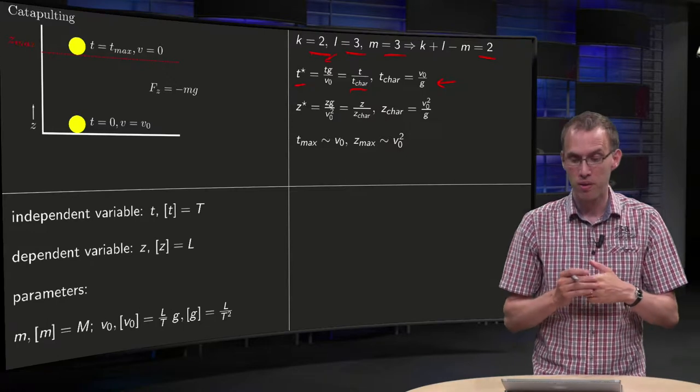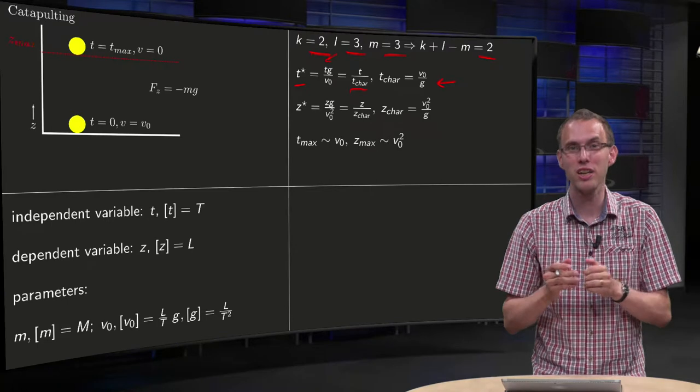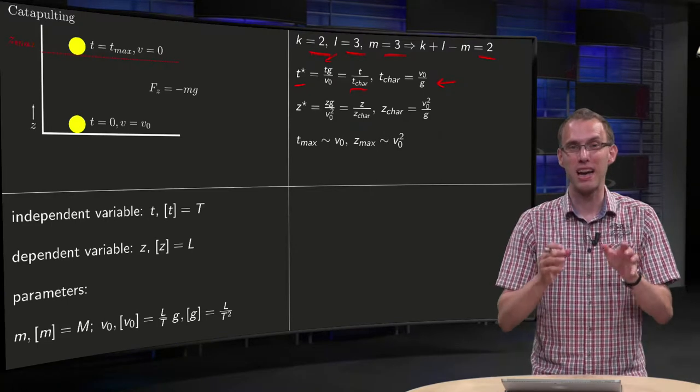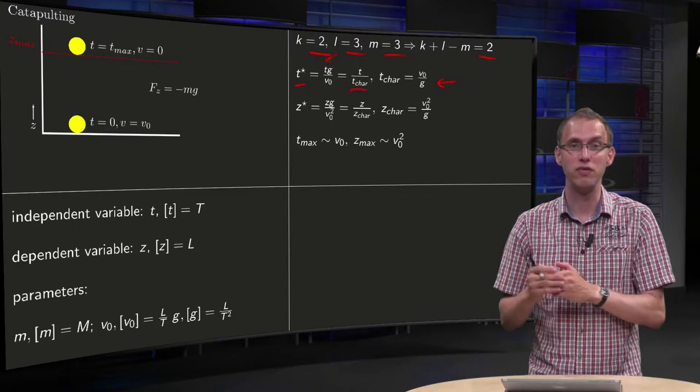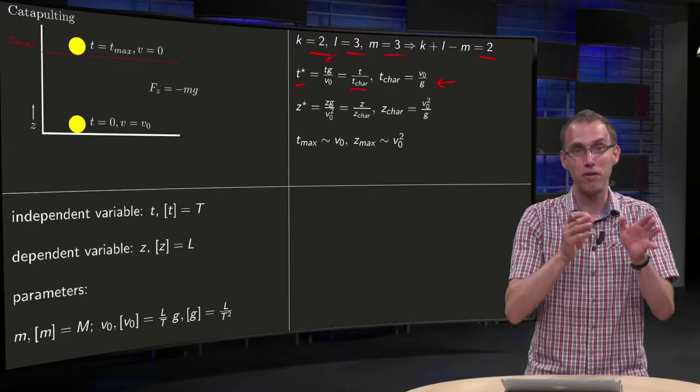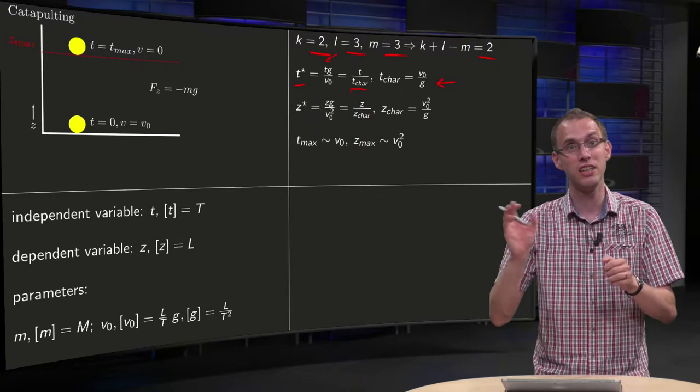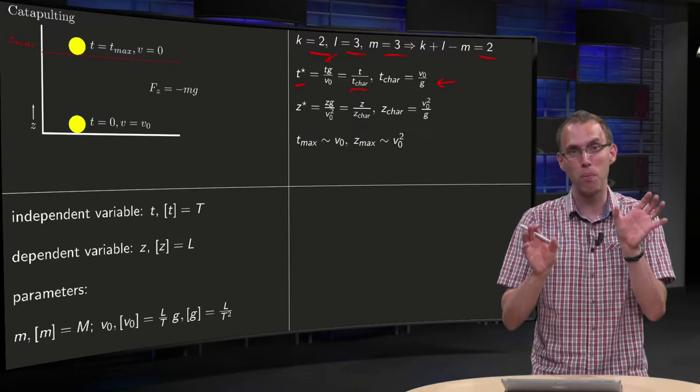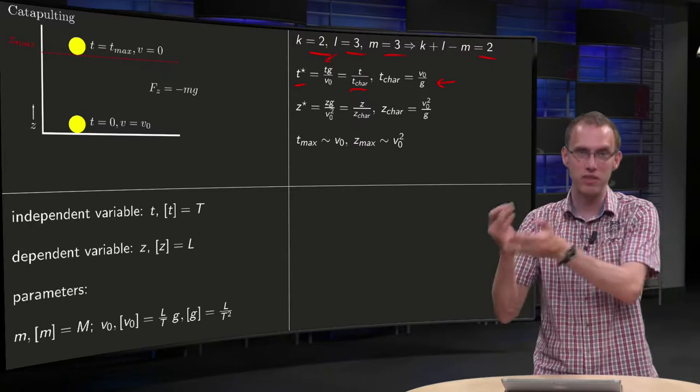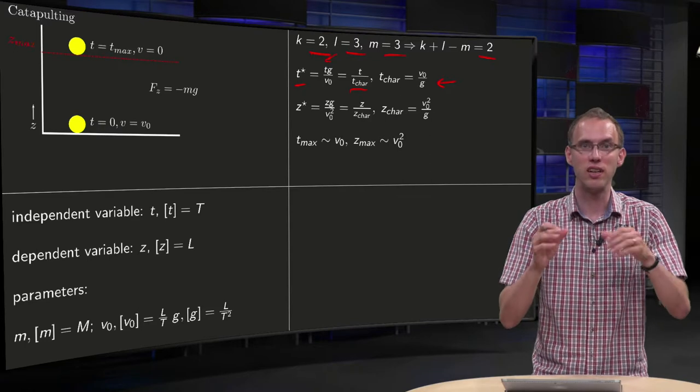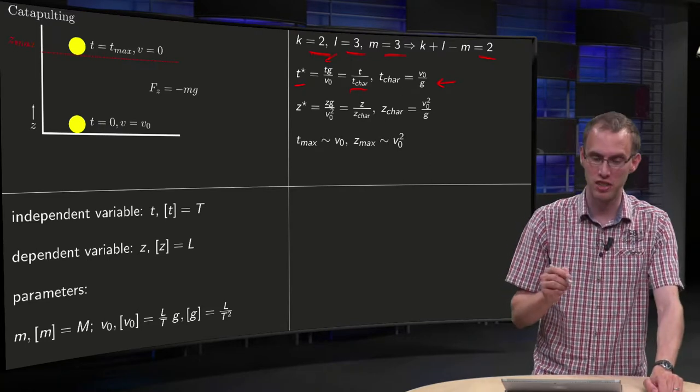And what does this characteristic time mean or measure? Actually you have something like t_char times g equals v0, so you have g times t, which is some velocity due to acceleration, and v0, so you are actually comparing velocities due to gravity with the initial velocity. So that is the physical interpretation of this particular choice of characteristic time.